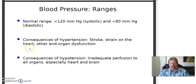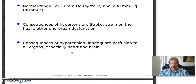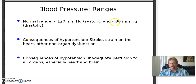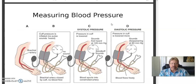Consequences of being too high: stroke, strain on the heart, other end organ dysfunction — it's also really hard on the kidneys. Consequences of hypotension, too low blood pressure: inadequate perfusion, blood flow to all organs, especially the heart and the brain. The diastolic is the most important. When it gets up to 90 or more, they start getting worried; over 100, more so — because this is the pressure on the heart and vascular tree when it's at its most relaxed.